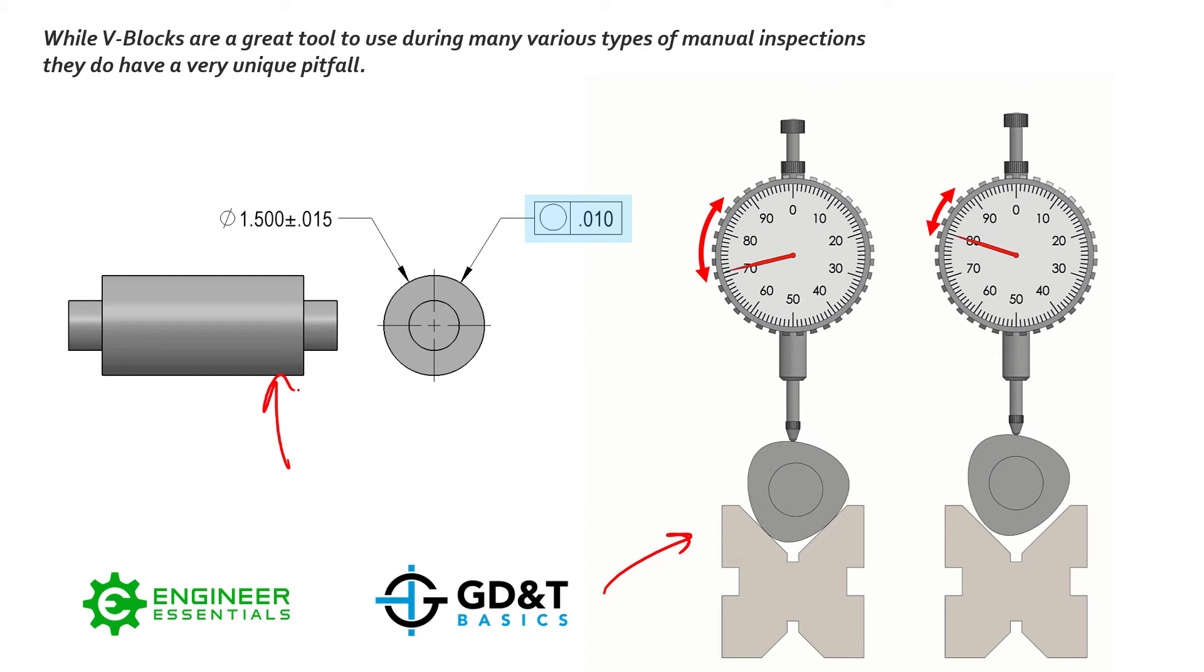In order to truly check runout, cylindricity, or circularity, you need to check the radial deviations of that surface back to its own axis, or in the case of runout back to the axis that is created by the datum feature. As you notice here, the axis of this outside feature, the outside diameter, that axis is actually going up and down inside these V-blocks. That's due to the unique geometry of the part we're inspecting and the V-block itself.